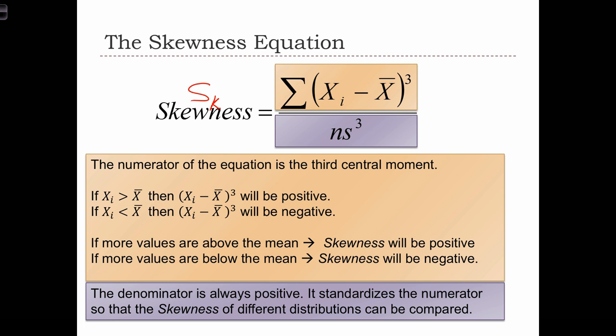We can see that the sign of the denominator will always be a positive value. The denominator will always be positive because it's the product of two positive things. n is positive,